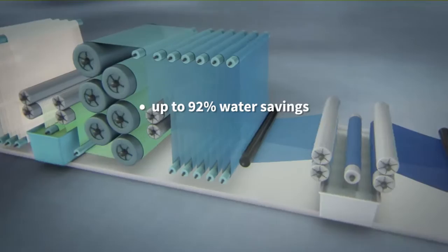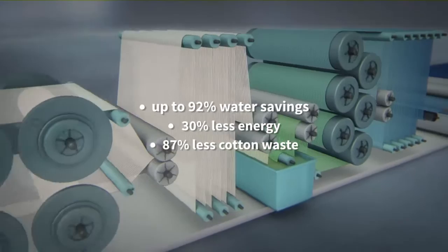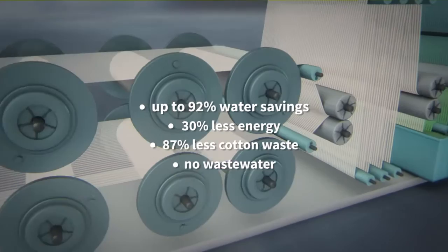The groundbreaking technology of Advanced Denim, the new pad-sizing ox process, provides savings of up to 92% water, 30% energy, and 87% cotton waste during dyeing and sizing, and generates absolutely no wastewater.